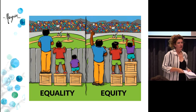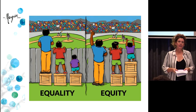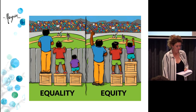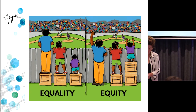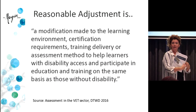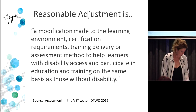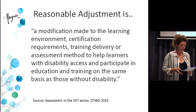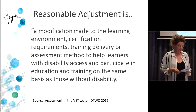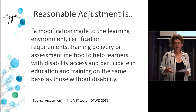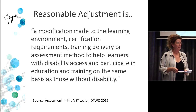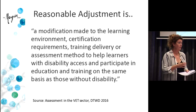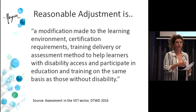There are a lot of documents out there around reasonable adjustment, and the reality is the definitions in those documents differ a little bit. This definition talks about reasonable adjustment as a modification made to the learning environment, to certification requirements, to training delivery or assessment methods, to help learners with a disability access and participate in education and training on the same basis as those without disability. There are also times when we make reasonable adjustments for people who have no disability — it's a generalised process, but much of the literature is focused on disability.